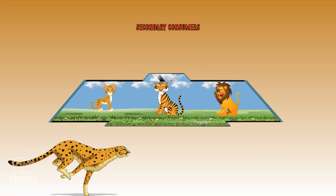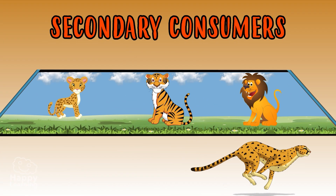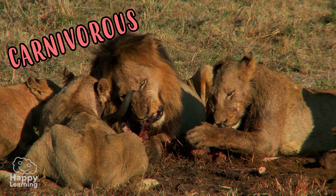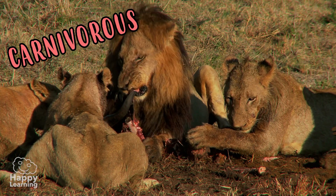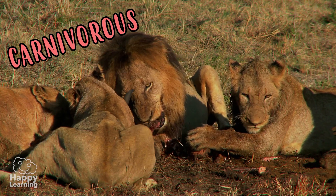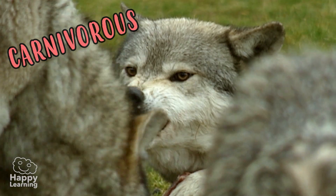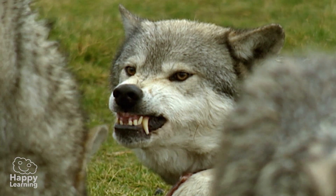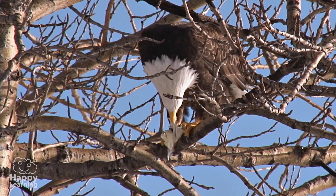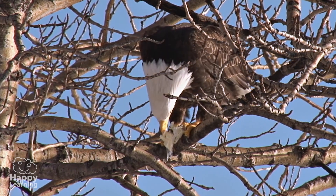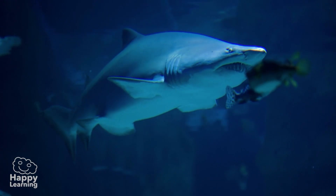The secondary consumers are animals which feed on other animals. They are carnivorous and they eat meat, such as these wolves, this eagle or this shark.